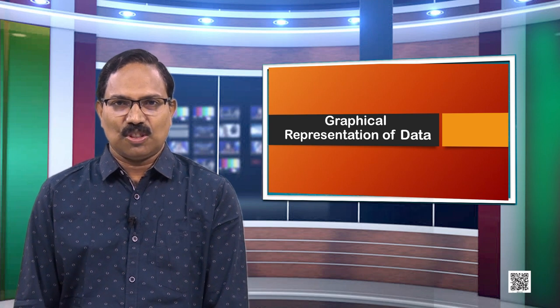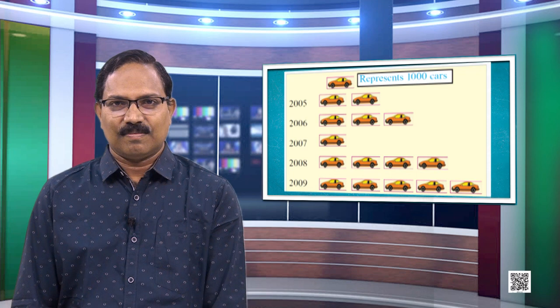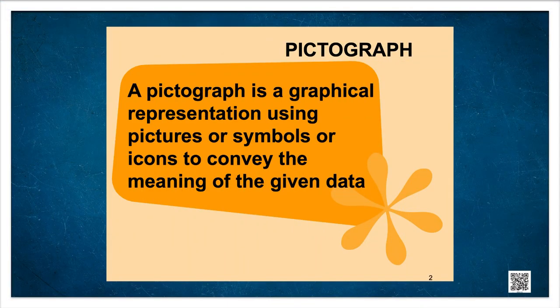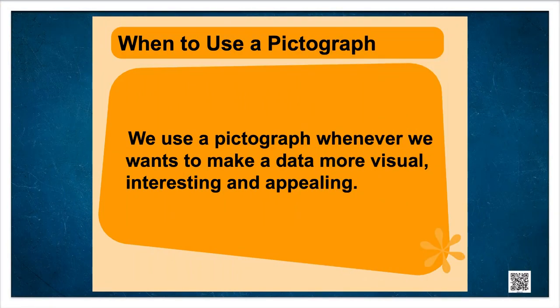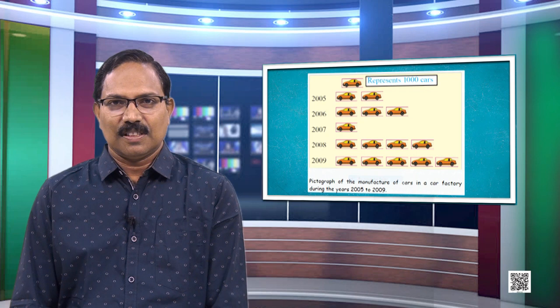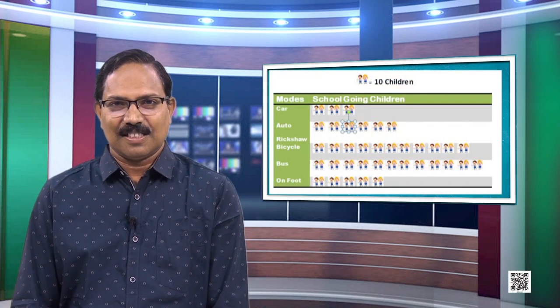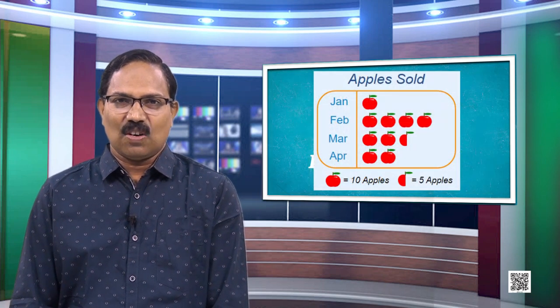Let us review some graphical representations. What type of graph is this? Yes, it is a pictograph. A pictograph is a graphical representation using pictures, symbols, or icons to convey the meaning of given data — a symbolic representation of information in a systematic manner. We use a pictograph whenever we want to make data more visual, interesting, and appealing. It is very interesting and conveys a lot of information.